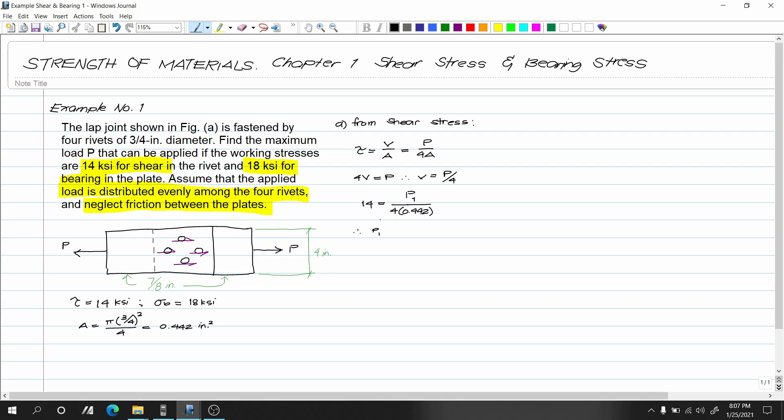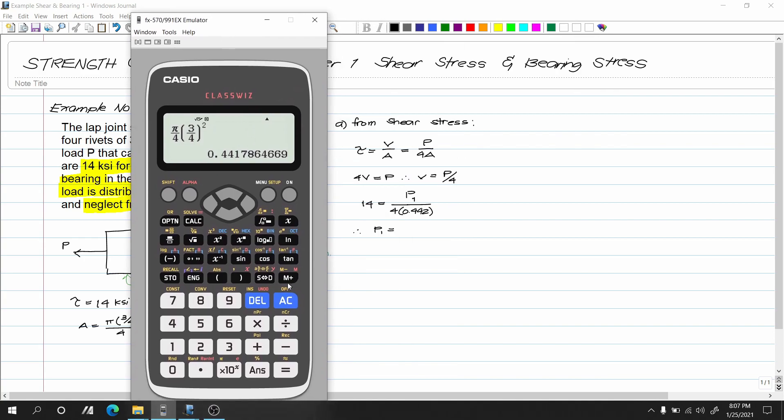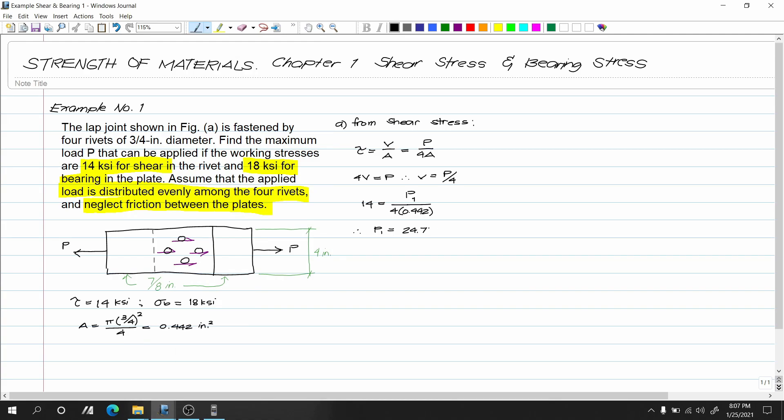Therefore, P1 equals, let's compute: 14 multiplied by 4 multiplied by 0.442 equals 24.752. This is kips times square inch, so square inch cancels, leaving kips. So P1 equals 24.752 kips.